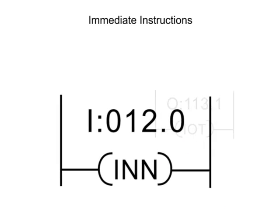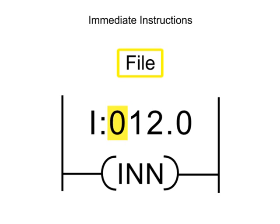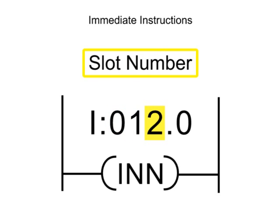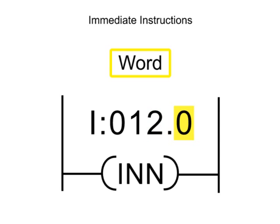Immediate instructions are addressed with the file, rack, and slot numbers separated by a decimal, with the word to be updated.